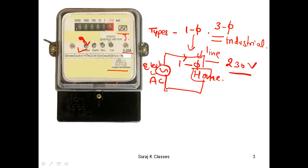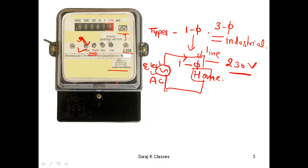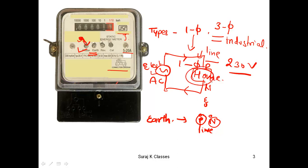Now let's move to the second light — earth. What is the meaning of earth? As I explained in a previous video, whenever you connect any electrical appliance, it connects to three terminals: phase, neutral, and earth. Phase is the live wire where 230 volts is coming. Neutral has no power but is used for closing the circuit. This is where your appliances are getting power, so there should be a closed circuit — neutral closes your circuit.